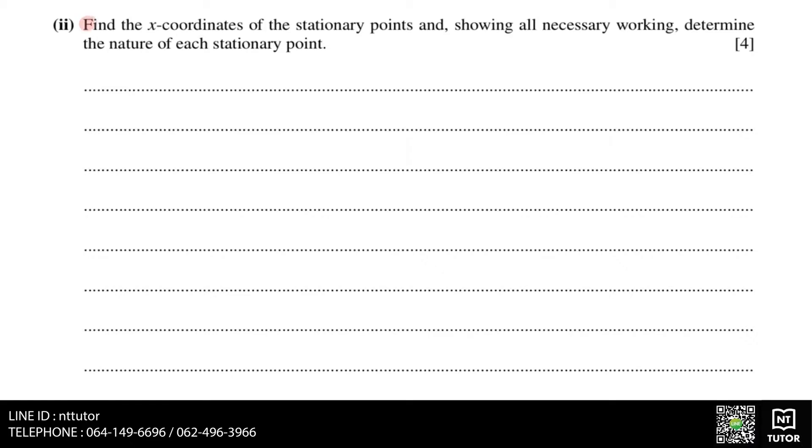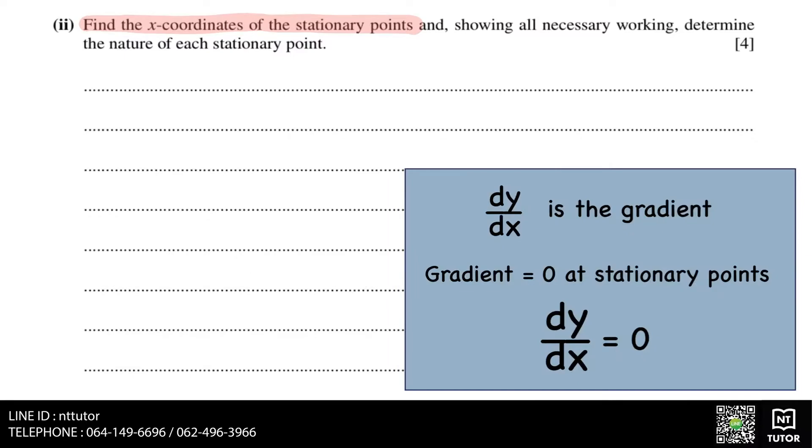A stationary point is a point where the gradient is equal to zero, and the gradient is represented by dy over dx. So in order to find the stationary points, we need to find when dy over dx equals zero.